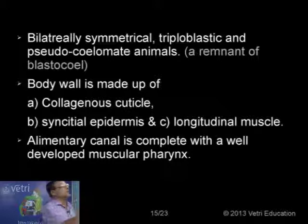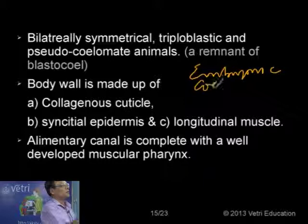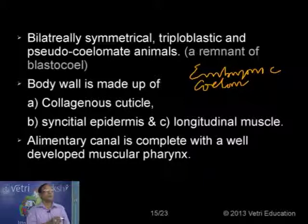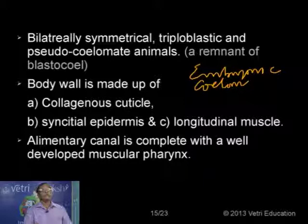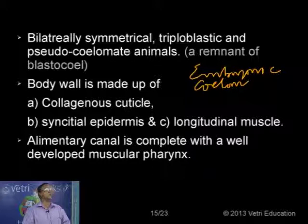Normally we have two types of coelom during development. One coelom is called the embryonic coelom, namely the blastocoel. The blastocoel of the blastula is considered as the embryonic coelom — that is the primary body cavity. During further development, the primary coelom gets transformed into a secondary coelom, which is the adenocoel.